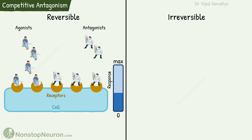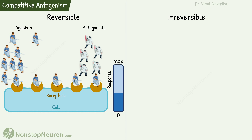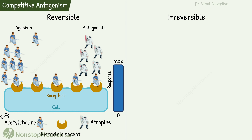The key feature of reversible antagonism is that if we increase the concentration of the agonist, the antagonists are displaced due to their weak binding, and the maximum response is achieved. For example, atropine versus acetylcholine on the muscarinic receptor — acetylcholine is the agonist and atropine is a reversible competitive antagonist.